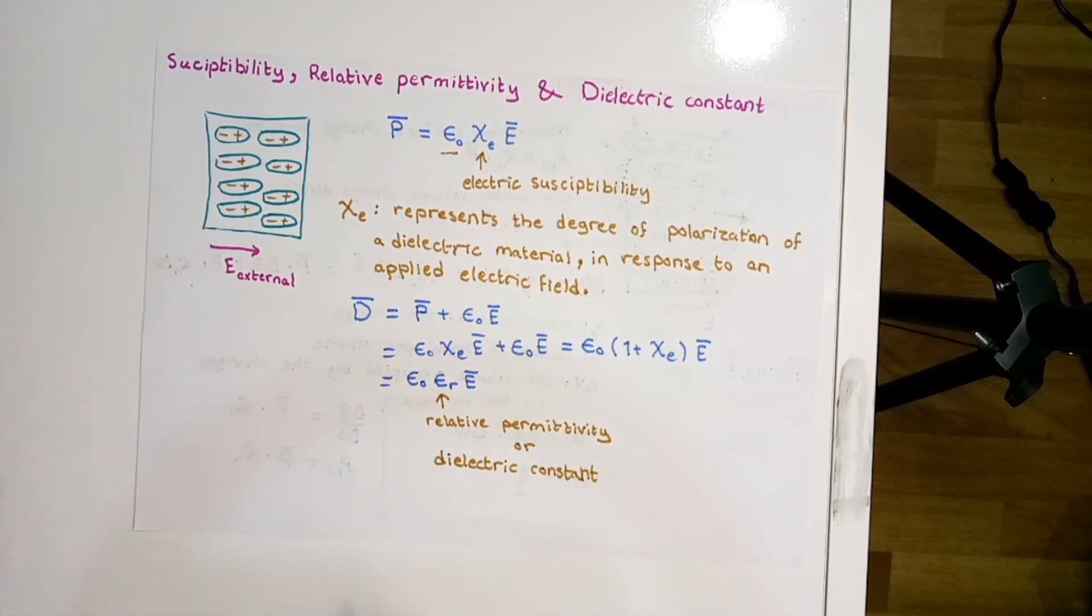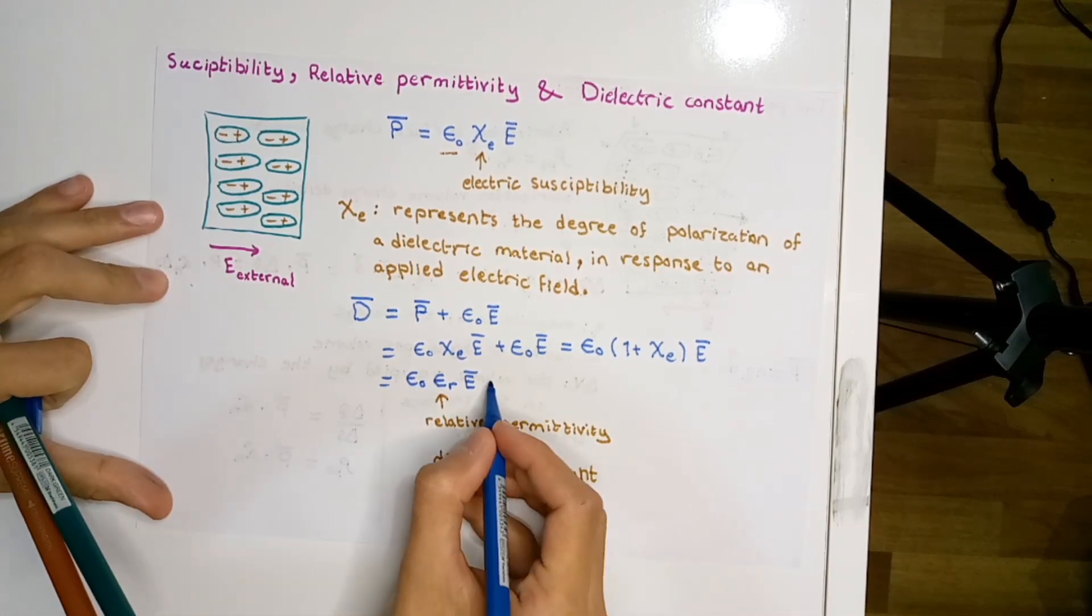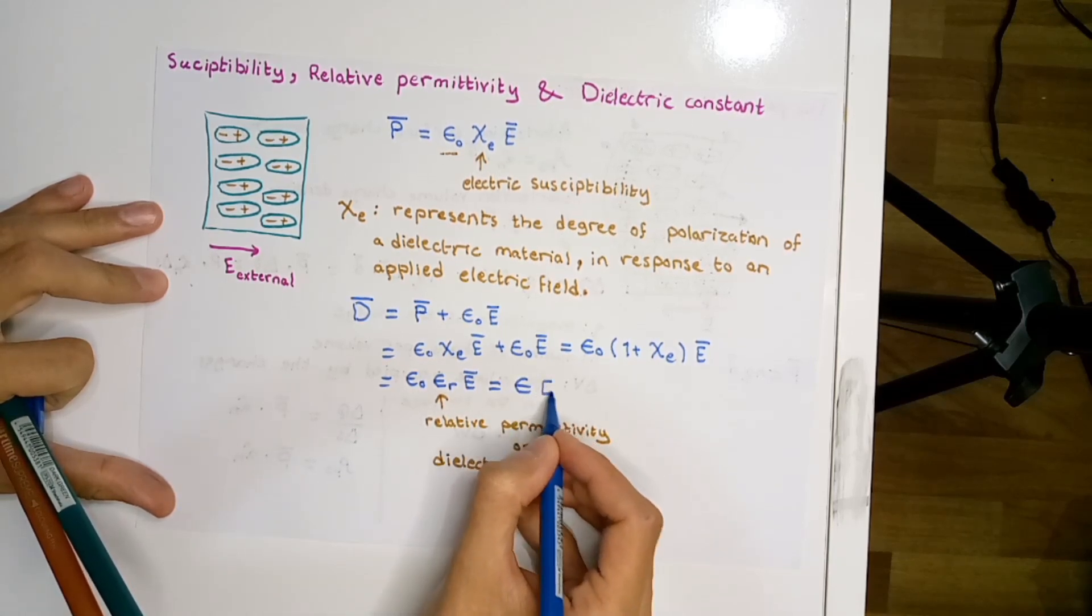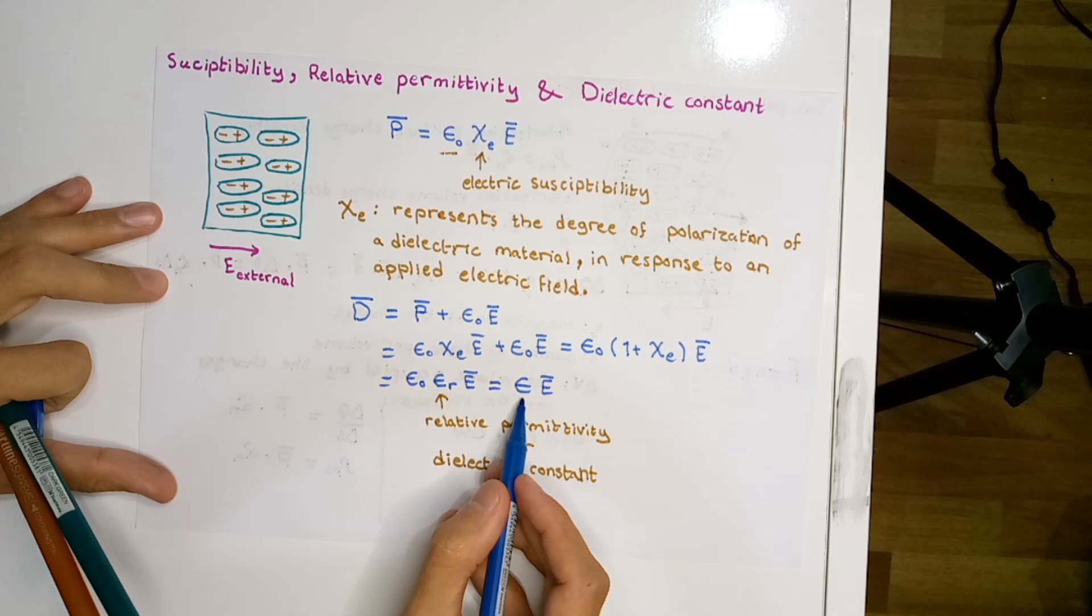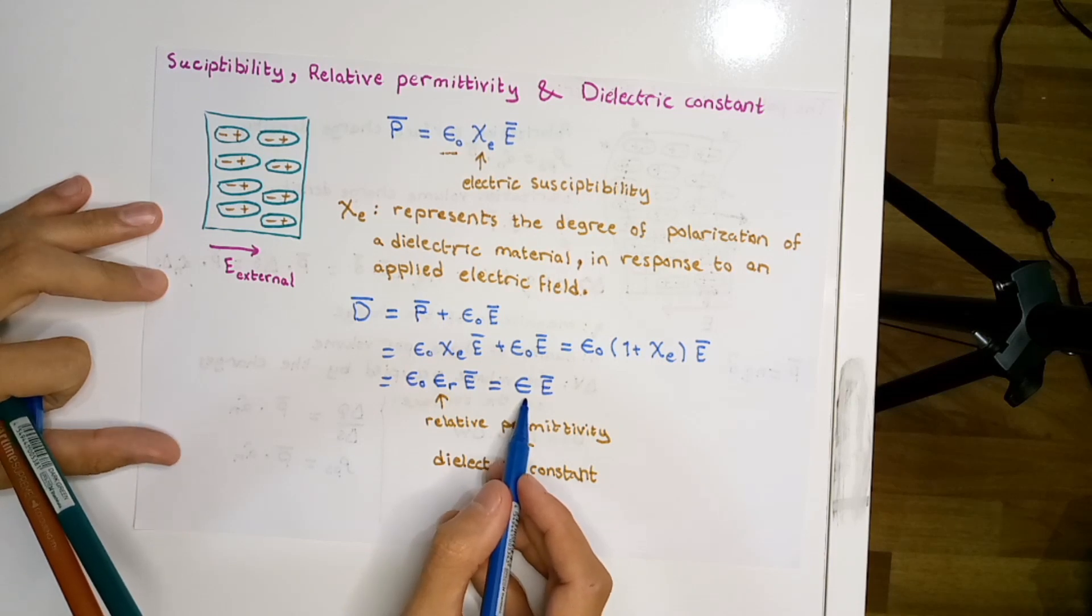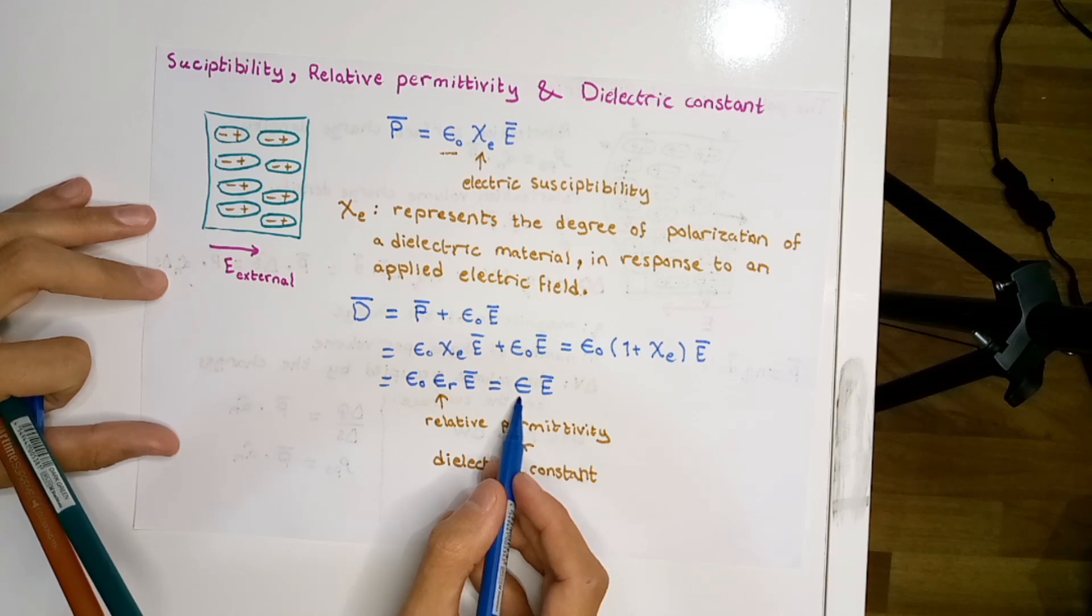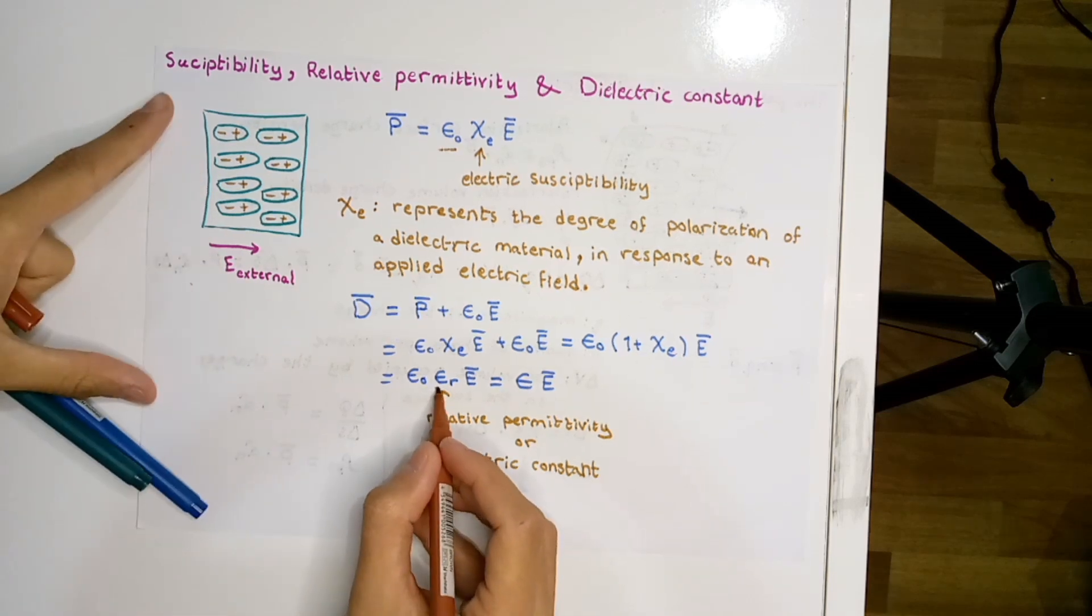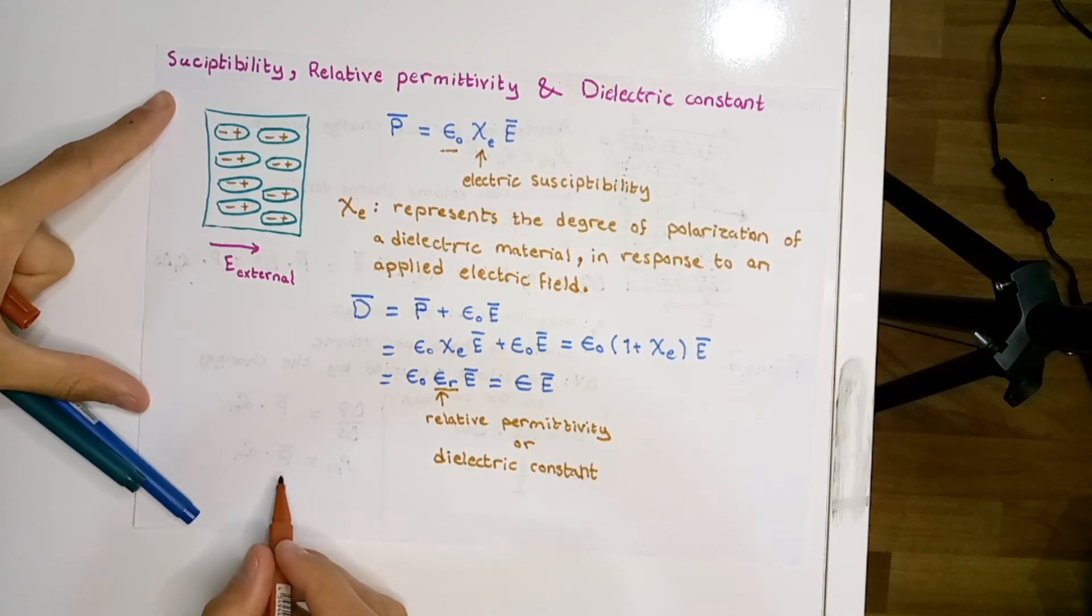We can unify these two epsilons into one epsilon with no subscripts. This epsilon with no subscripts is called the absolute permittivity, or simply the permittivity. Generally in electromagnetics we are handling εᵣ, the relative permittivity, instead of χₑ, the electric susceptibility.